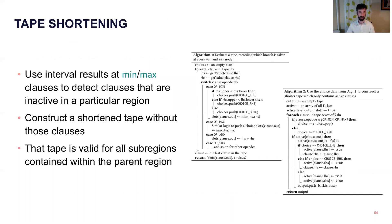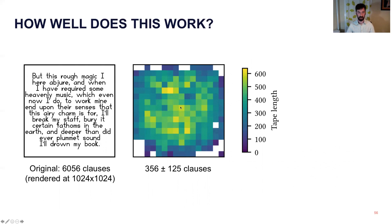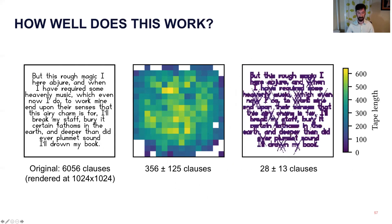You might wonder how well this works, and the answer is it works amazingly if your model has a lot of CSG. So this shape had originally 6,000 clauses. Once you go to 64 by 64 tiles, each individual tile has an average of 350 clauses left active in it. Once you go to 8 by 8 tiles, they have an average of 28 clauses left active. This is a 200-something improvement, and you can see here why the overhead of the interpreter is dwarfed by algorithmic optimizations.